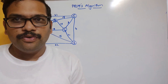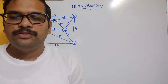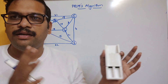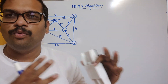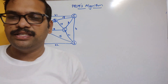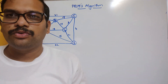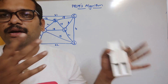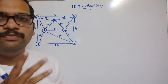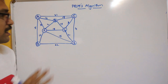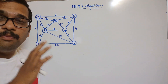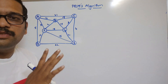Hello friends, welcome back to our channel. In the previous sessions we have seen what is a spanning tree and what is a minimum cost spanning tree, and we have already seen one example — taking a graph and constructing the minimum cost spanning tree. In this session we'll go with one more example, so let us consider this graph and find out the minimum cost spanning tree for this particular graph.